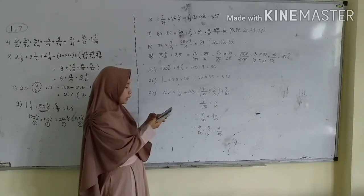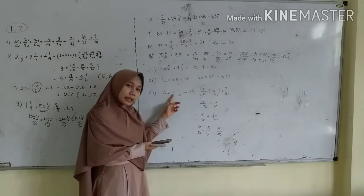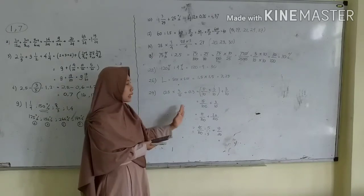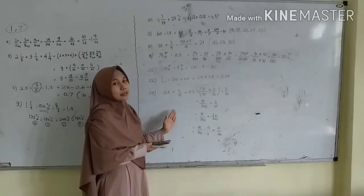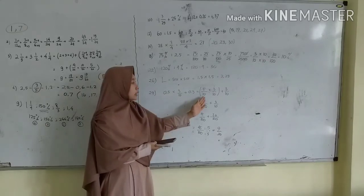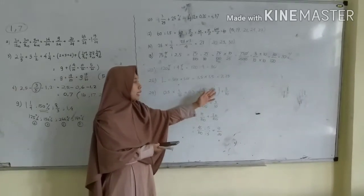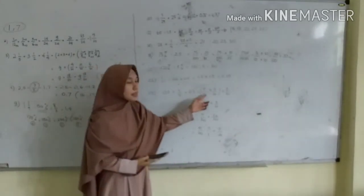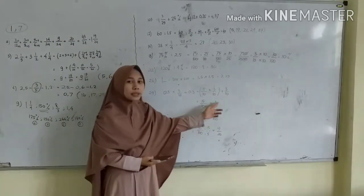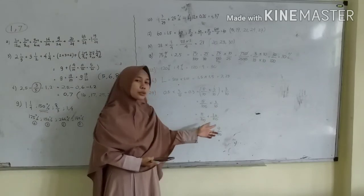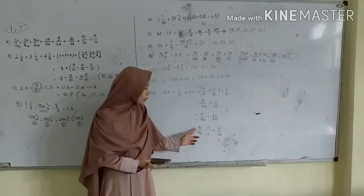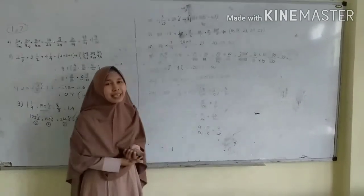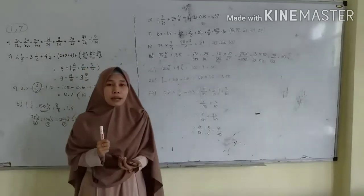Terakhir nomor 29. Nomor 29 itu adalah hasil dari, disini ada perkalian dan penjumlahan. Maka caranya adalah pecahan dari sebelah kiri dikali dulu. Karena bentuknya berbeda dirubah dulu bentuknya supaya sama menjadi pecahan. Dikali pecahan ya, pecahan dikali pecahan, atas dikali atas, bawah dikali bawah. 5 dikali 16, 10 dikali 10 sama dengan 100. Kemudian ditambah 3 per 10, penyebutnya beda disamakan dulu penyebutnya. Hasilnya adalah 45 per 100, disederhanakan menjadi 9 per 20.